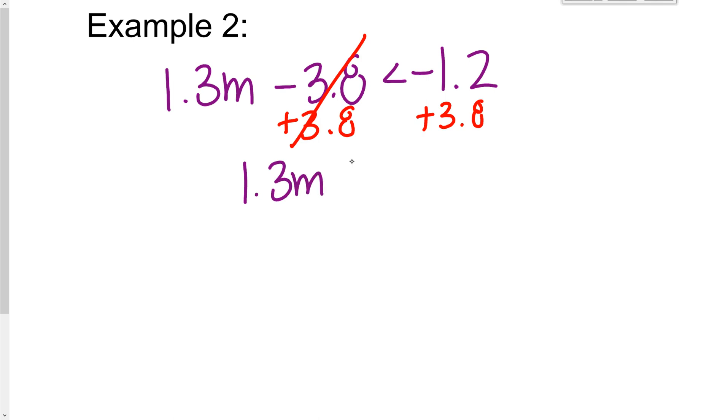1.3m is going to be less than, remember, this is a negative 1.2. So then that gives me 2.6.